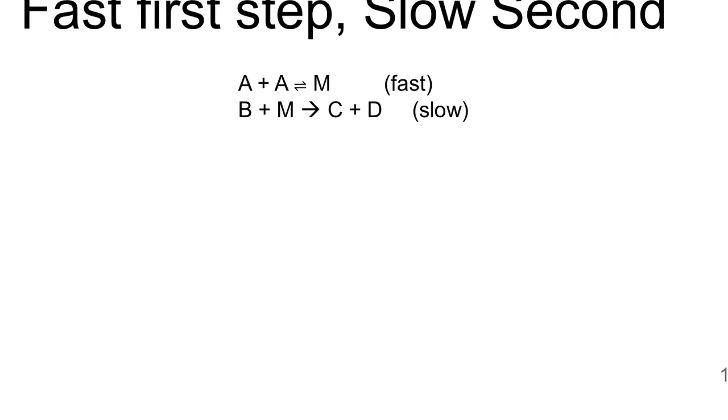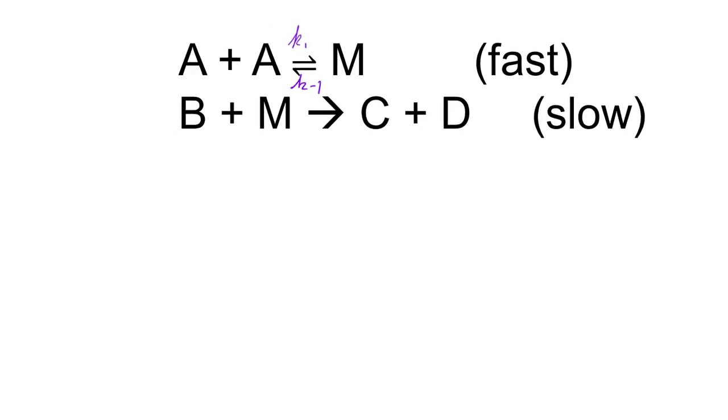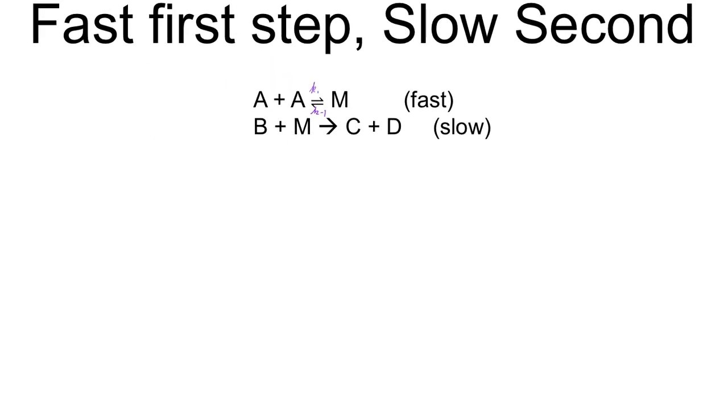Here's a very general reaction where we have a fast first step and a slow second step. A plus A - notice these equilibrium arrows. What that's going to say is that we have a rate constant in the forward direction K1, and a rate constant in the reverse reaction, K-1 for reverse. It's just common to write it that way. Then we have B plus M forming C plus D. This is also going to have a rate constant associated with it, we'll call it K2.